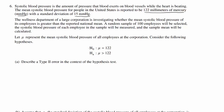The null hypothesis is that the population mean equals 122, and the alternative hypothesis is that it's greater than 122 — greater than the reported mean of 122.